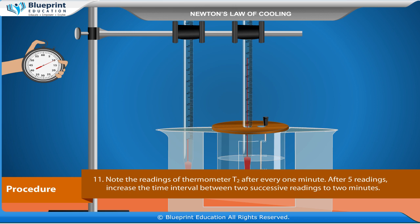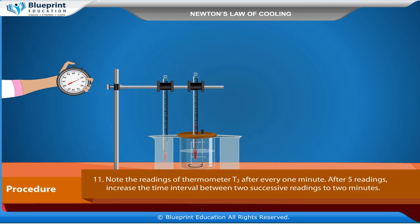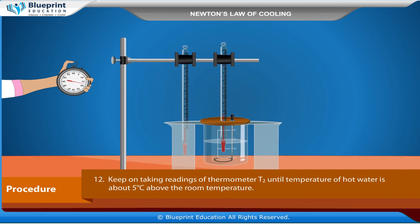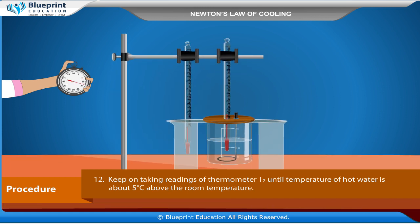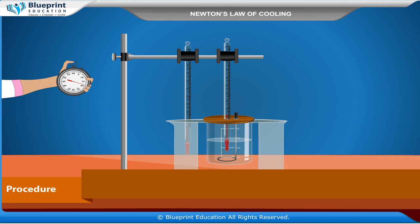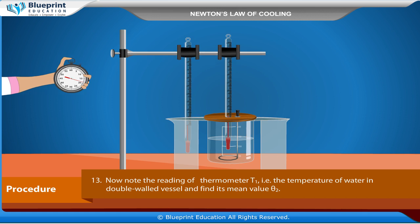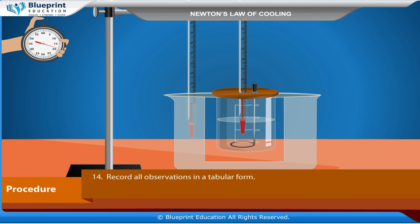Note the readings of thermometer T2 after every one minute. After five readings, increase the time interval between two successive readings to two minutes. Keep on taking readings of thermometer T2 until the temperature of the hot water is about 5 degrees Celsius above room temperature. Note the reading of thermometer T1, i.e., the temperature of water in the double-walled vessel, and find its mean value θ₂. Record all observations in a tabular form.